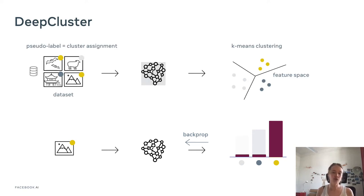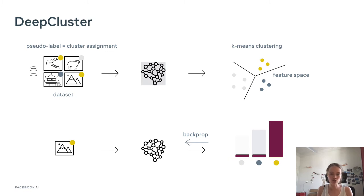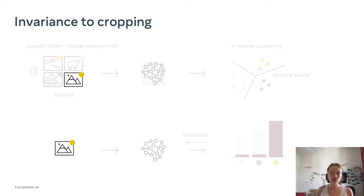One motivation for why this works is that we are bootstrapping on the representation of a randomly initialized network. A randomly initialized network is actually pretty bad, but not completely random. If you cluster on features from random weights, you get bad clustering, but not random clustering — it will focus on low-level patterns. If you train the network to predict this bad-but-not-random clustering, the weights improve slightly, the next clustering is slightly better, and so on.